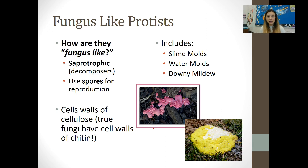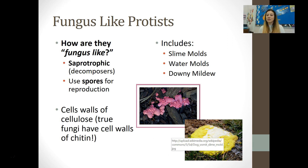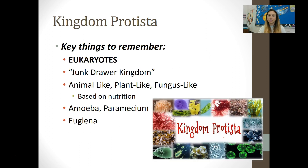Now moving on to fungus-like protists. They are fungus-like because, just like fungi, they are saprotrophic — meaning they are decomposers. Like fungi, they use spores for reproduction. However, they are not identical to fungi: fungi have cell walls made of chitin, while fungus-like protists have cell walls made of cellulose, which is one reason we classify them as protists and not fungi. Examples include slime molds, water molds, and downy mildew.